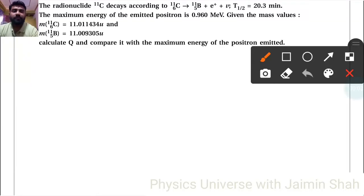The radionuclide carbon-11 decays according to this equation. The half-life τ₁/₂ equals 20.3 minutes. The maximum energy of the emitted positron is 0.960 MeV. Given the mass values for carbon and boron, calculate Q and compare it with the maximum energy of the positron emitted.